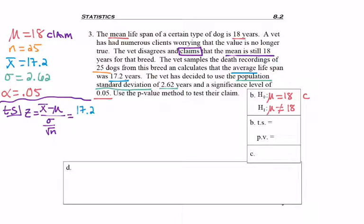I calculate 17.2 minus 18. Remember we can always get the population value from H naught. The standard deviation was given and the sample size was 25 to get negative 1.5267. Since we're using the Z table, which only has two digits to the right of the decimal, I'll round my test statistic to negative 1.53.